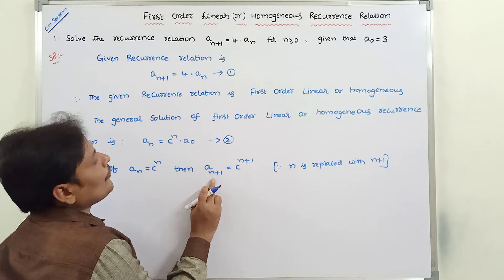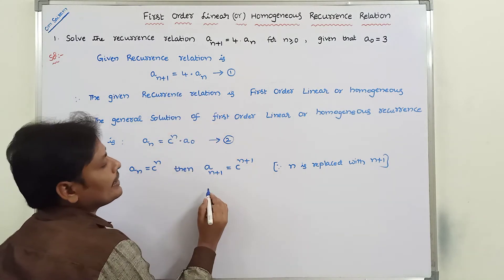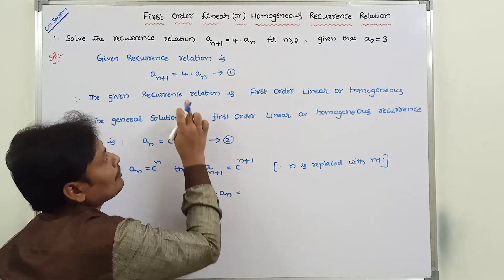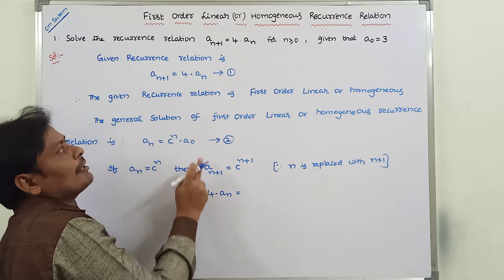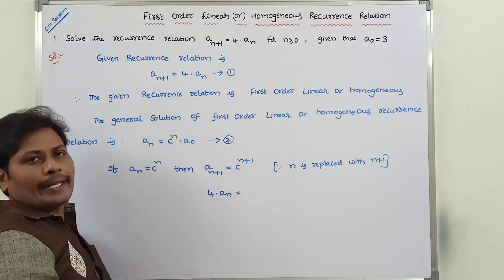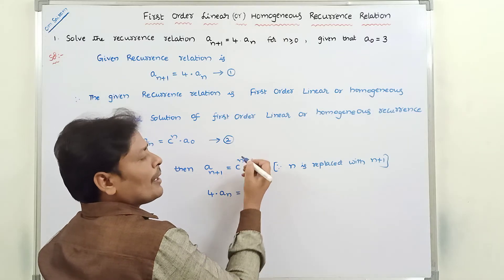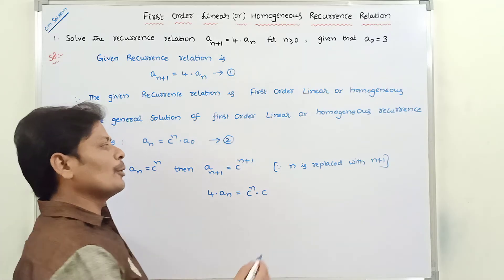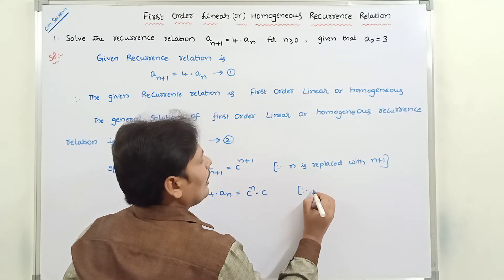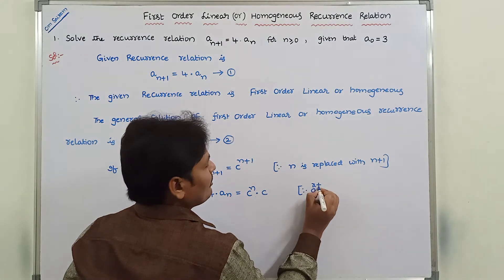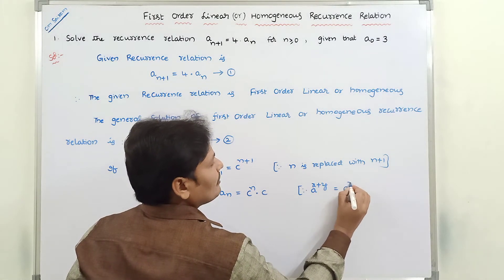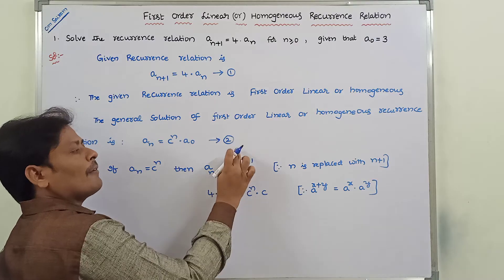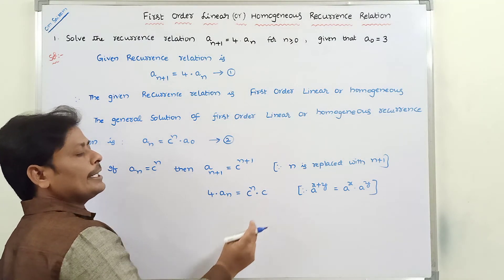What is the value of a(n+1)? Already given from the problem, a(n+1) = 4 · a(n). Next, c^(n+1) can be written as c^n · c, since a^(x+y) = a^x · a^y. In the same way, c^(n+1) = c^n · c.